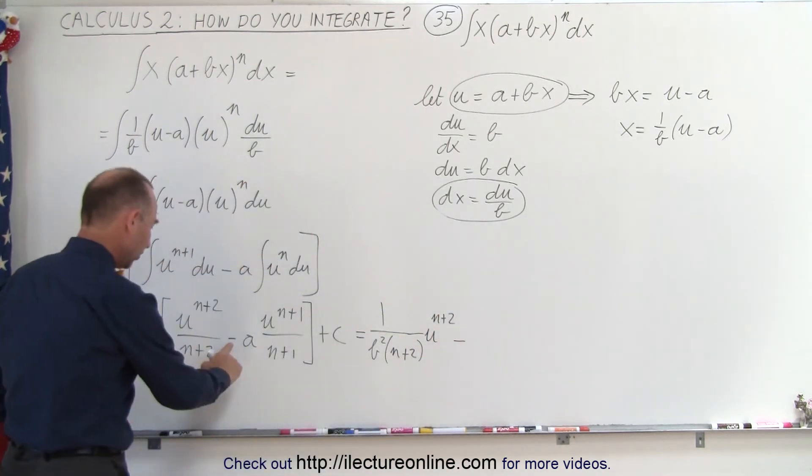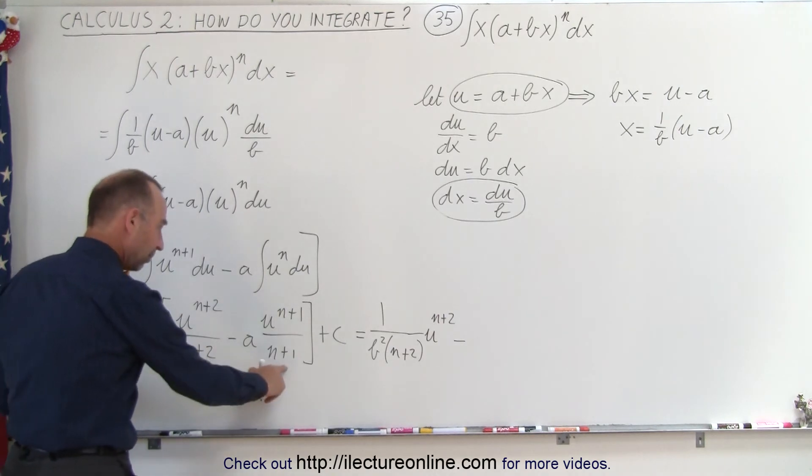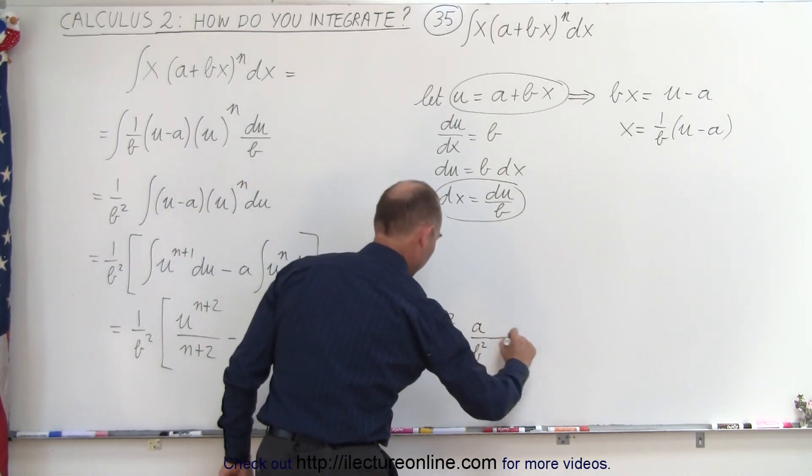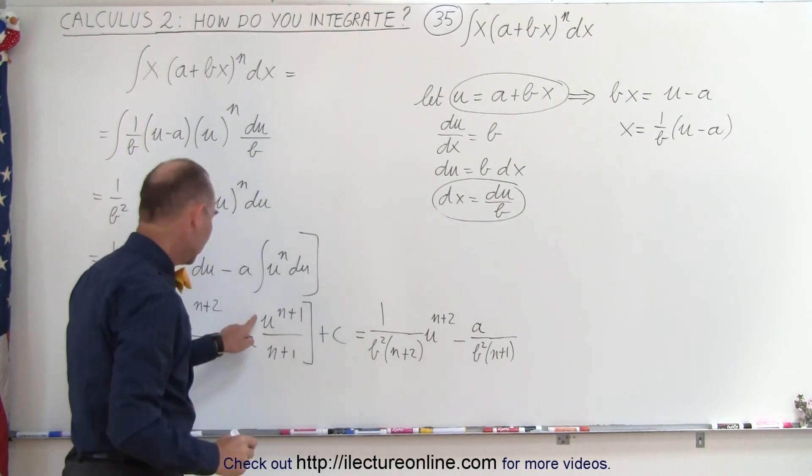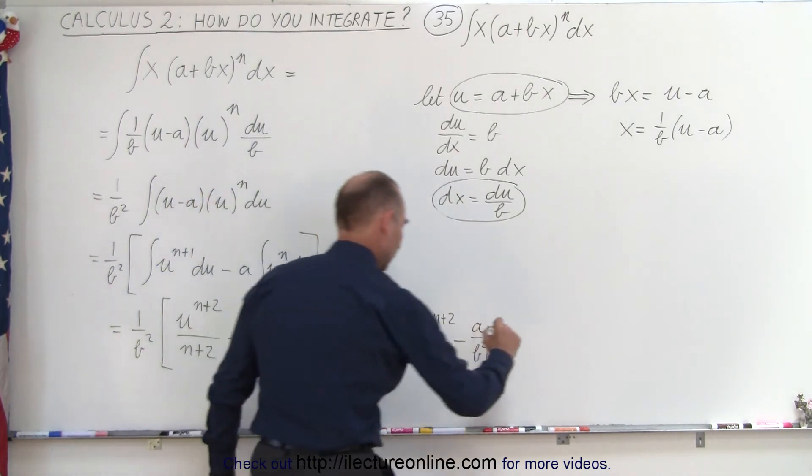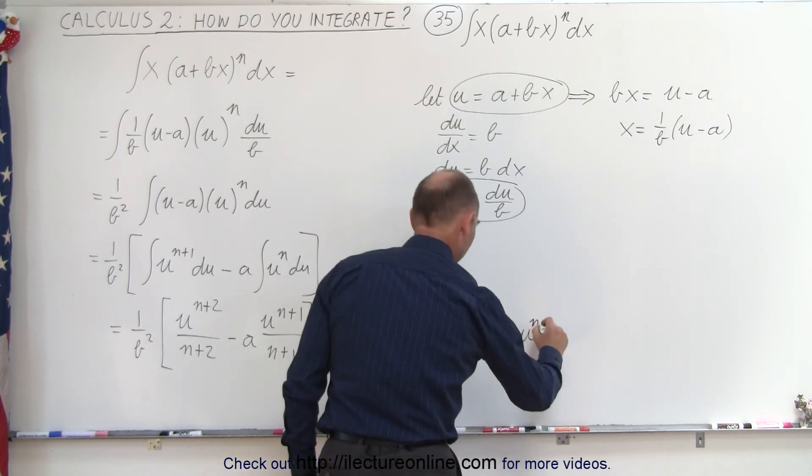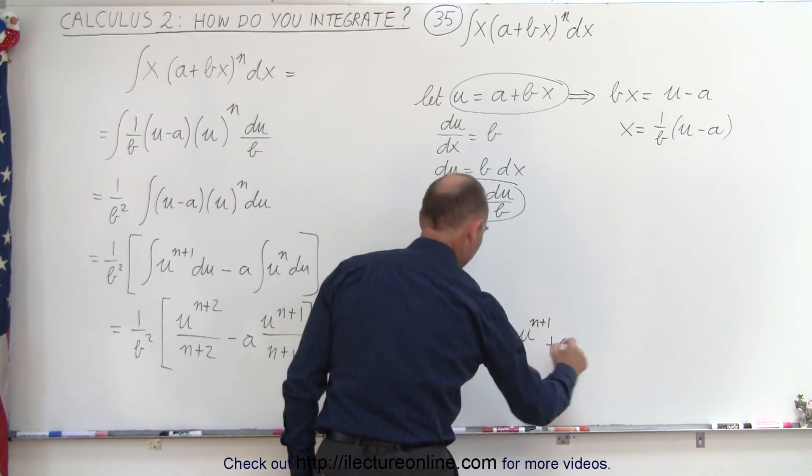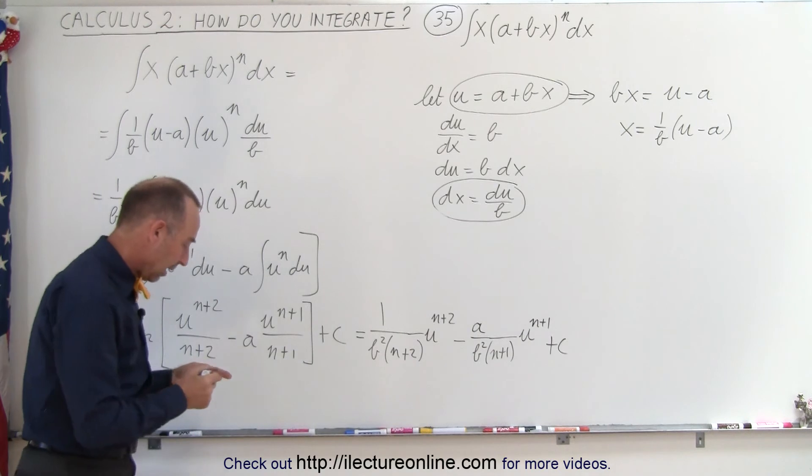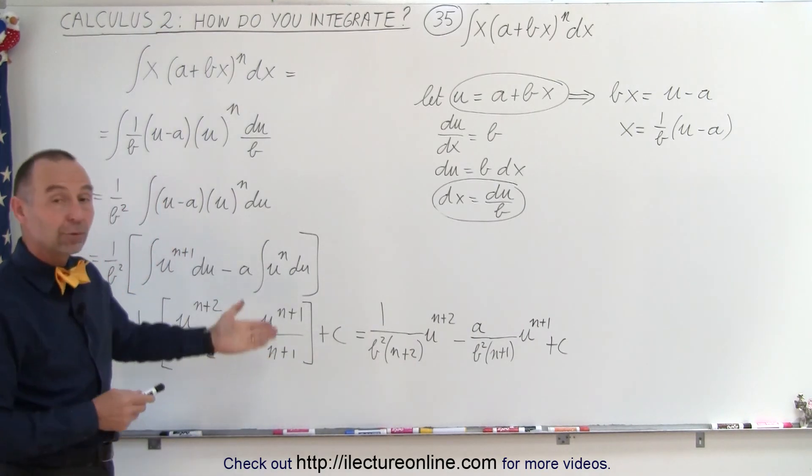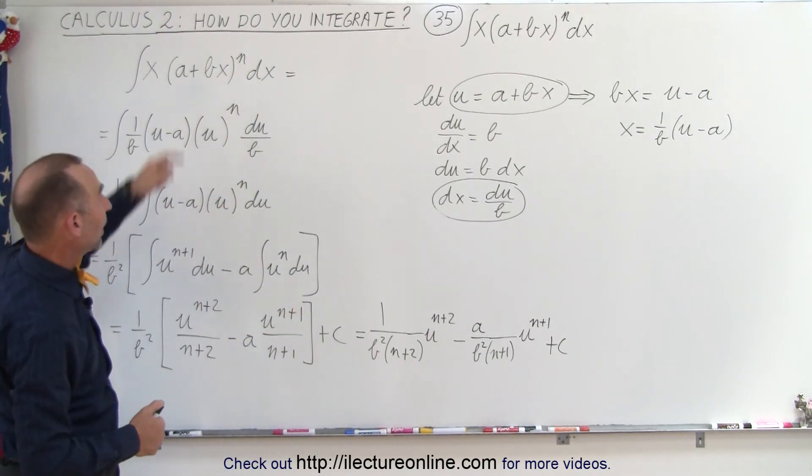Minus a over b²(n+1), times u^(n+1), plus the constant of integration.